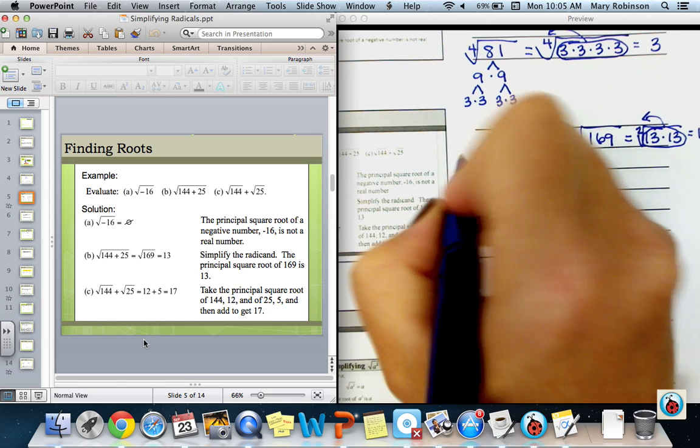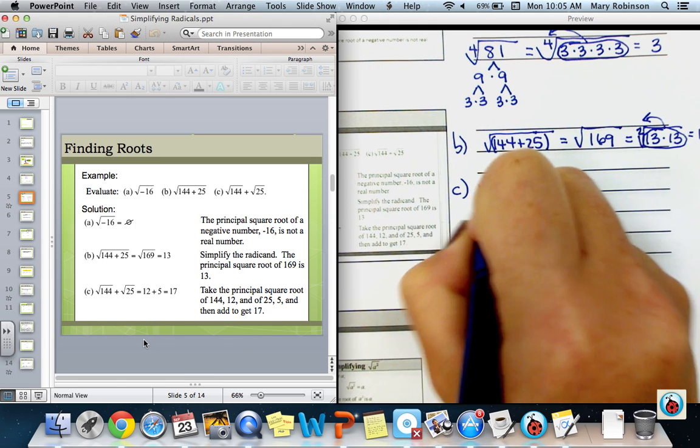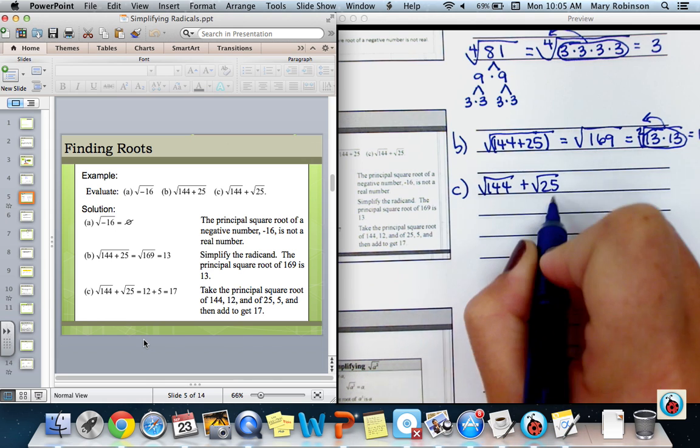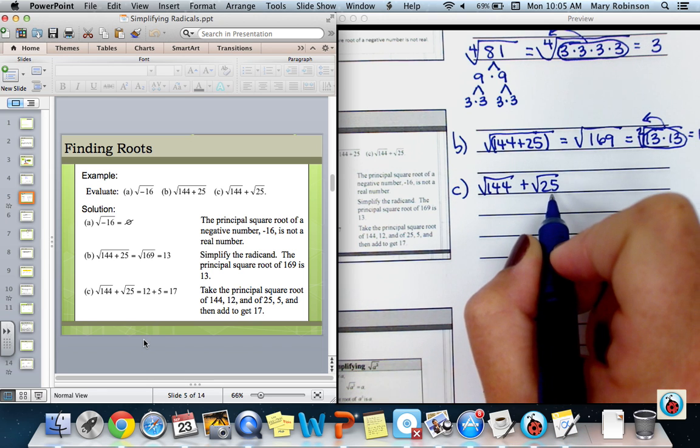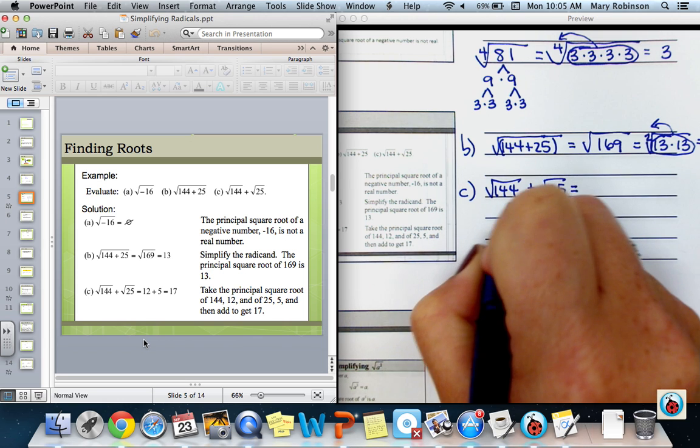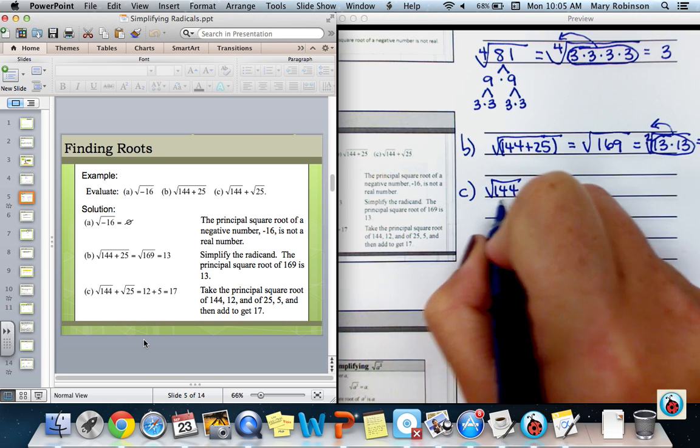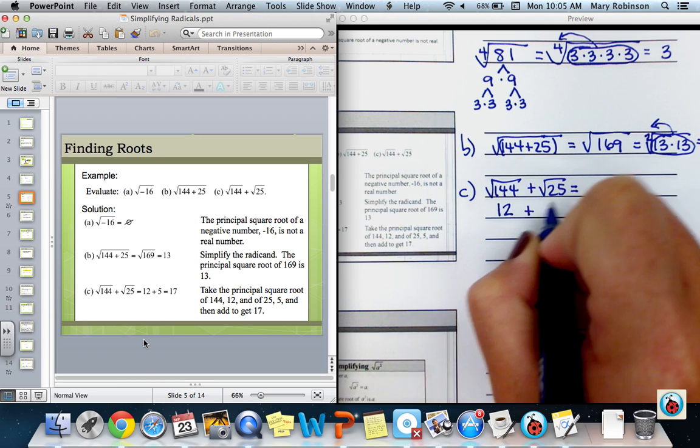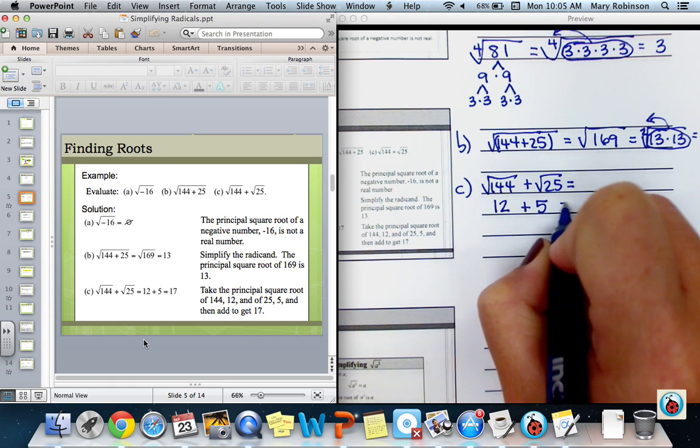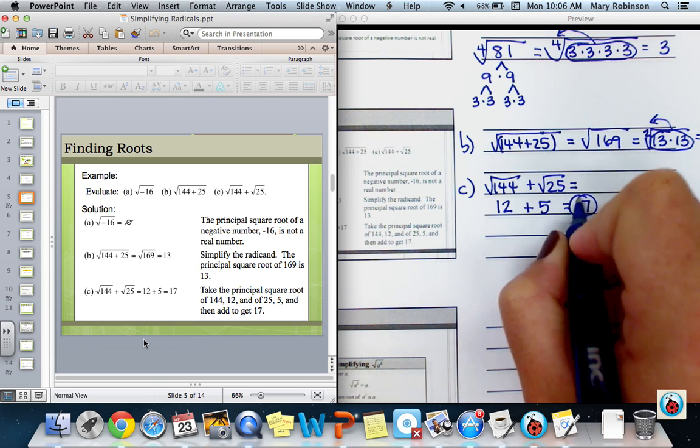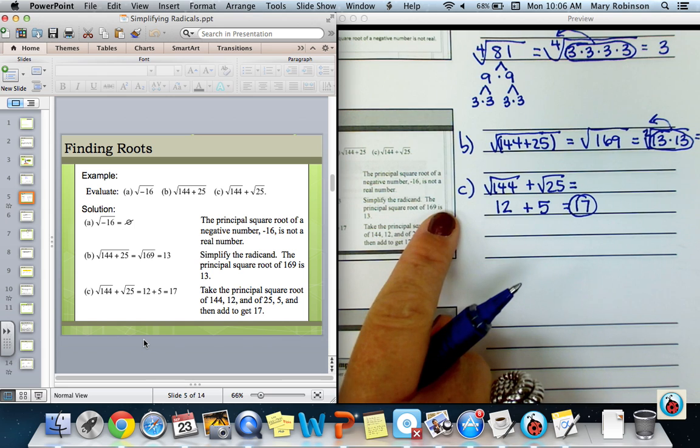Contrasting that with part C here, we have the square root of 144 plus the square root of 25. We cannot add these because they are not the same radicand. That's a rule. We cannot add unlike radicands. So therefore, we want to simplify each one individually. We know that the square root of 144 is equal to 12, and we know the square root of 25 is equal to 5. We find the sum adding 12 and 5 to get 17, and that would be our answer. So see how B and C are different.